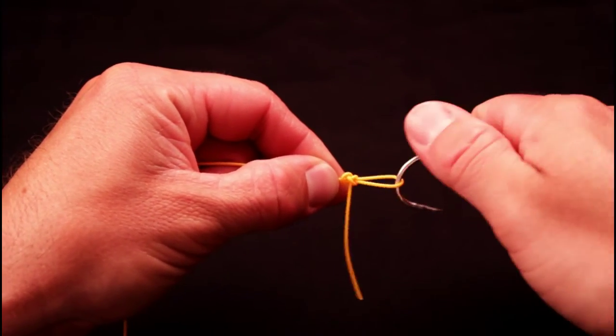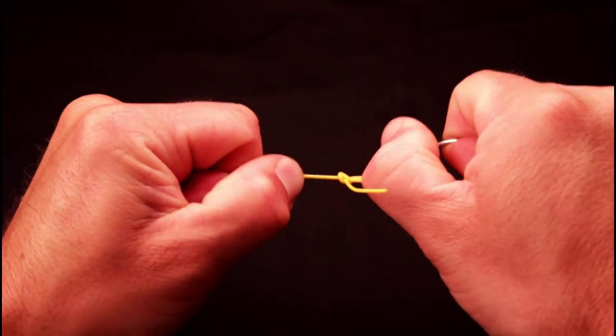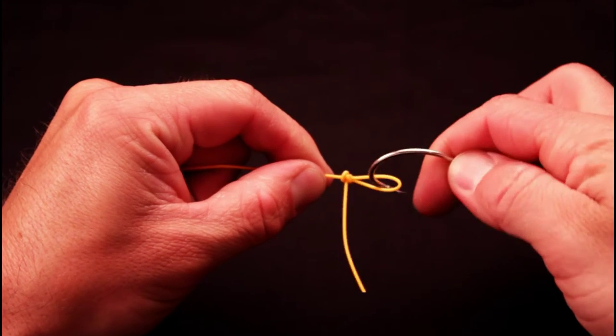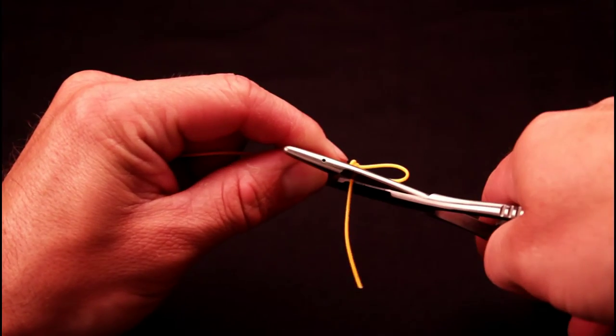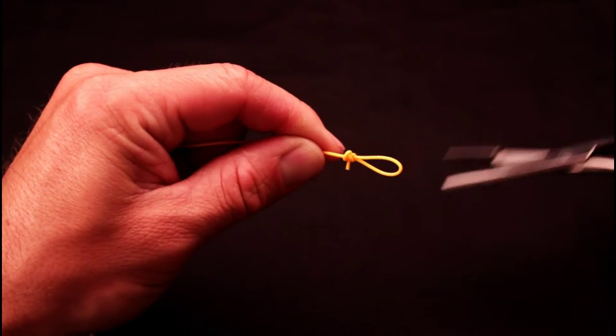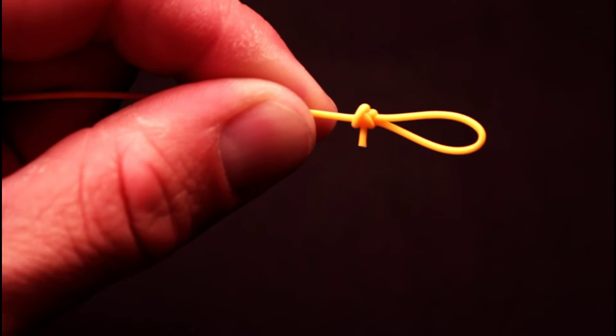Secure the loop with the bend of a hook or other blunt object. Trim the tag end and the perfection loop is complete.